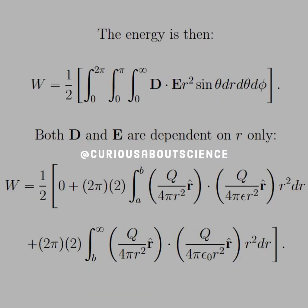All right, so the energy now is the triple integral or the volume integral of the dot product with D and the electric field in their respective regions. Since both D and E only depend on R, the angular integrals phi and theta can just be expressed in the parentheses 2 pi times 2 respectively.